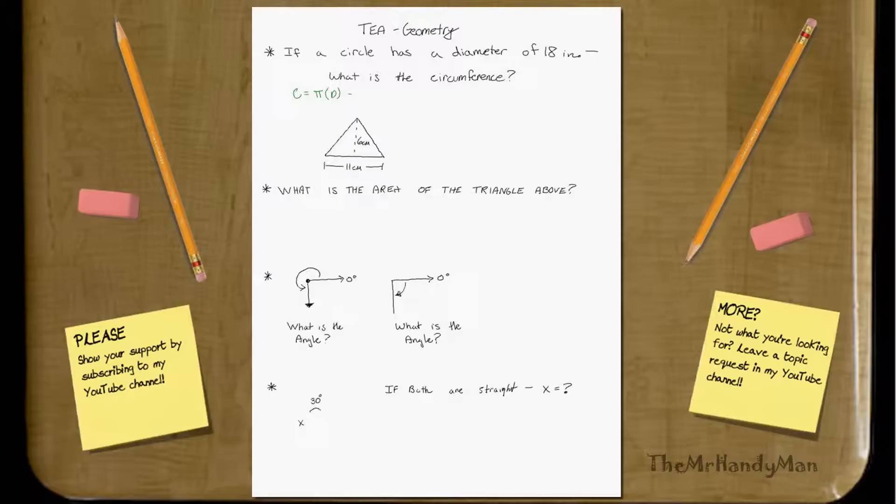First off, let's start with the one at the top. If a circle has a diameter of 18 inches, what is the circumference? Well, the equation for circumference is C equals pi times D. Since we know the diameter, pi times 18 inches, which is 3.14, times 18, which if you work out the math, equals 56.52.